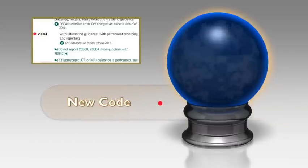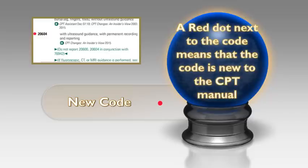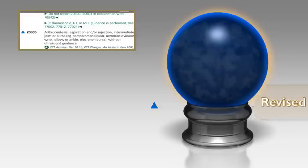The red dot means the code is new to the CPT manual. For example, code 20604 with ultrasound guidance with permanent recording and reporting is new — if you open your 2014 book, it may not have been there.